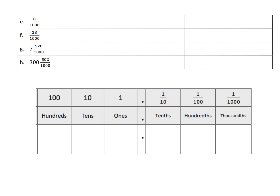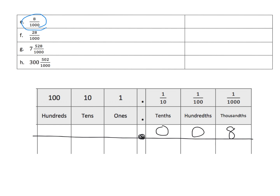This is more of the same, only now they're giving us fractions, and we're still supposed to write it as a decimal. So this first one — eight thousandths — that's pretty straightforward. That's eight in the thousandths column, and that's it. What's in the hundredths column and the tenths column? Big old fat zeros. So the answer is 0.008. Remember, it's customary, although not required, to put a leading zero in front of that decimal.